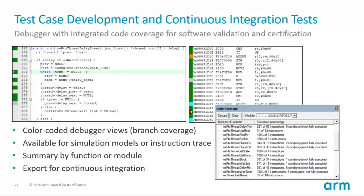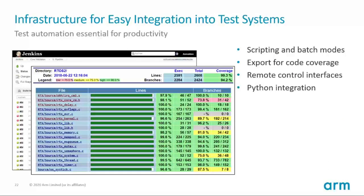Several models support branch coverage. Our U-Link Pro debug and trace adapter uses trace to get accurate code coverage information directly from the silicon. The color-coded information helps you during test code development as it is updated during execution. All this code coverage data can be exported for reporting, which is important for test integration. Here you see the integration into your Jenkins CI system. This helps you to validate a system constantly during development.